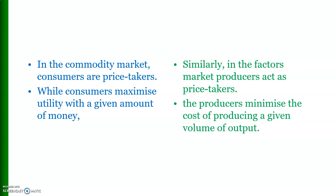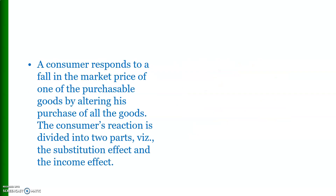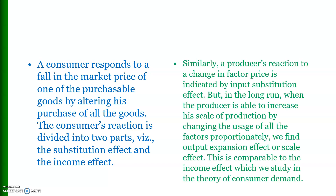While the consumer maximizes utility given a fixed budget, the producer minimizes the cost of producing a given volume of output. A consumer responds to a fall in the market price of a good by altering purchases of all goods, and this reaction is divided into the substitution effect and the income effect. Similarly, a producer's reaction to a change in factor price involves an input substitution effect, and in the long run, an output expansion effect or scale effect — comparable to the income effect in consumer theory.